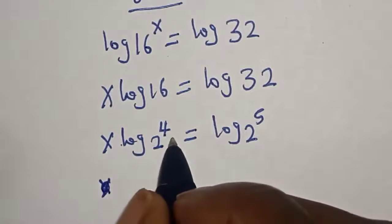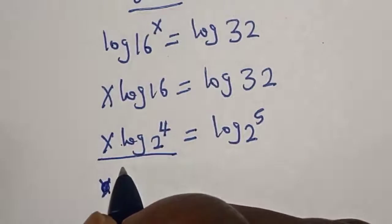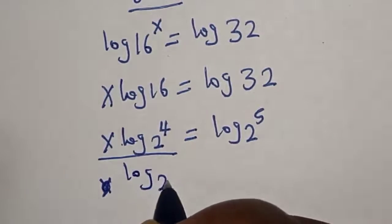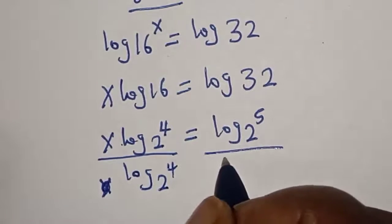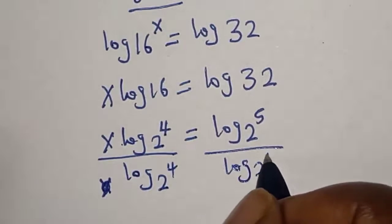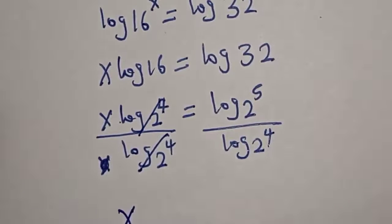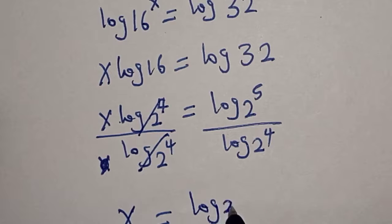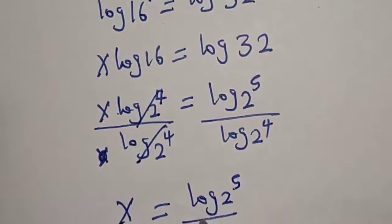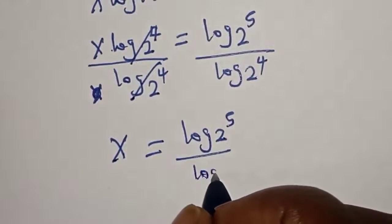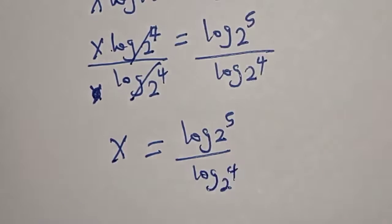Divide both sides by log 2 raised to power 4. This will cancel. s equals log 2 raised to power 5 over log 2 raised to power 4.